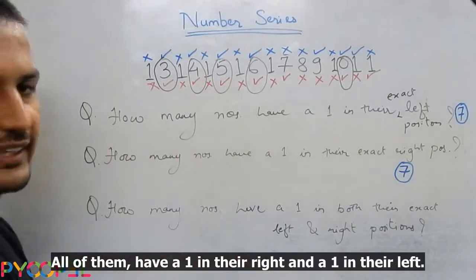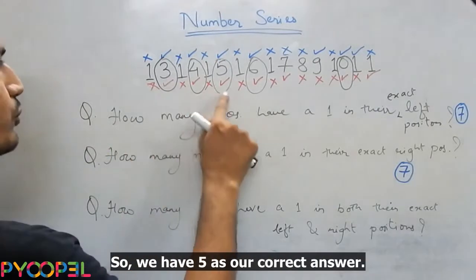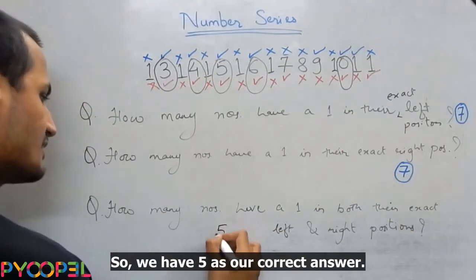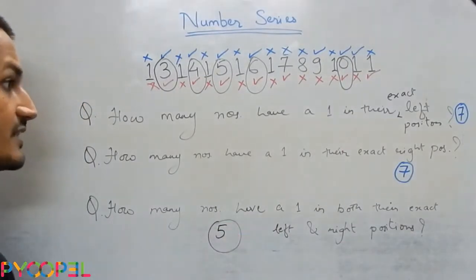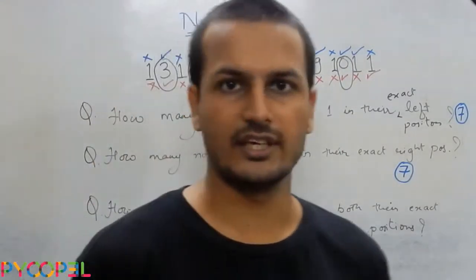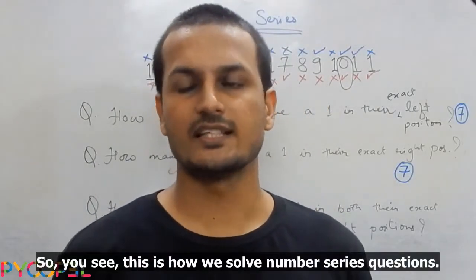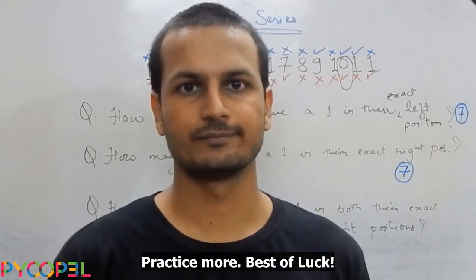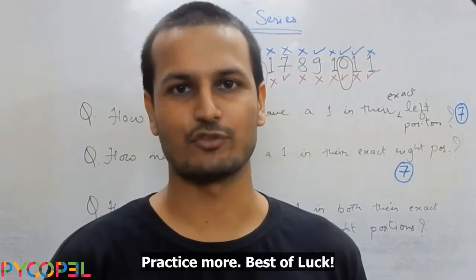So we have one, two, three, four, five as our correct answer. So you see, this is how we solve number series questions. Practice more. Best of luck.